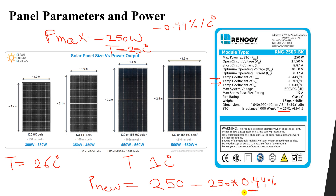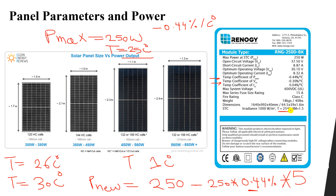If instead of 25°C the temperature is 30°C, the power decreases by the temperature coefficient multiplied by the temperature difference. Since 25°C became 30°C, the difference is 5°C, so: P_new = 250 − (250 × 0.44% × 5). This gives the reduction in power as a percentage per degree Celsius.